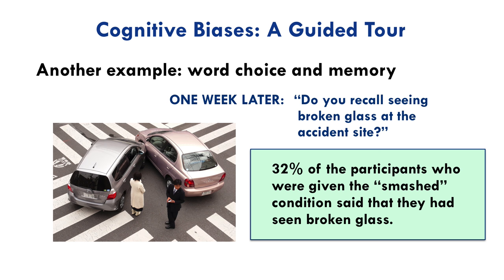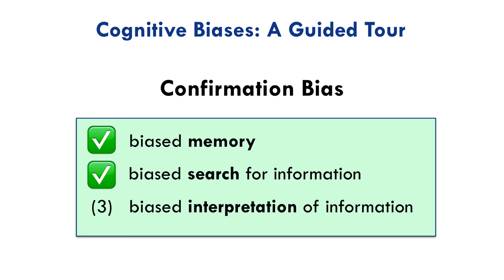These kinds of results have important implications for evaluating eyewitness testimony reports. We now know that the reliability of eyewitness testimony is affected by a host of biases, this being just one of them. The general lesson is that the way we search for information, and in this case the choice of wording used to solicit information, can bias the responses we get. So that's biased search for information.